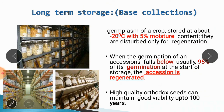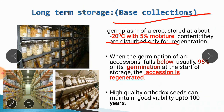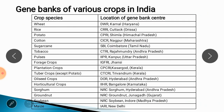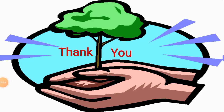Long-term storage, also referred to as base collection: germplasm is stored at about minus 20 degrees Celsius with 5 percent moisture content, and is only disturbed for regeneration purposes. High-quality orthodox seeds are maintained here in long-term storage and can be stored up to 100 years. In the next lecture, we are going to see the remaining part of plant genetic resources or germplasm activities.